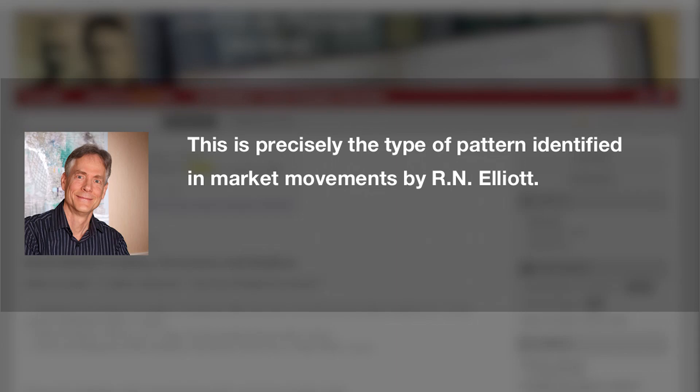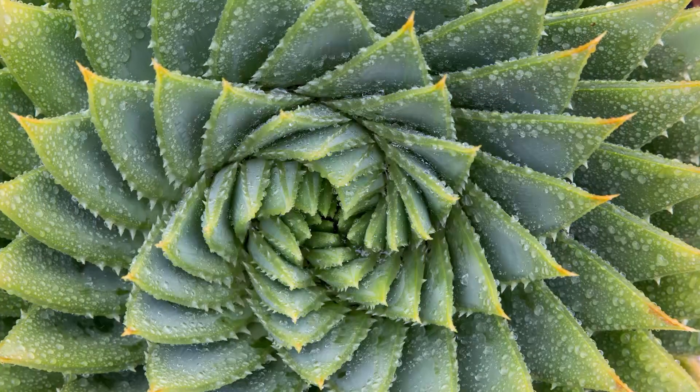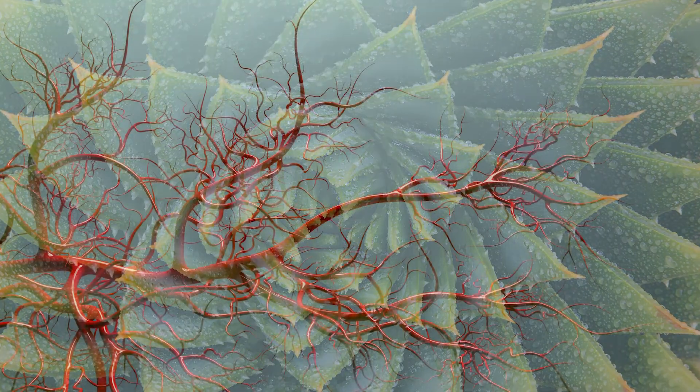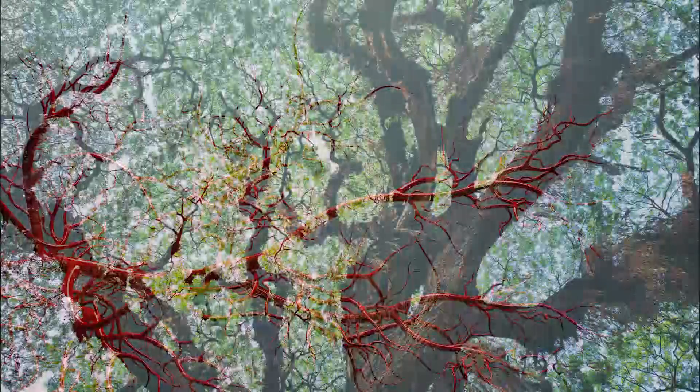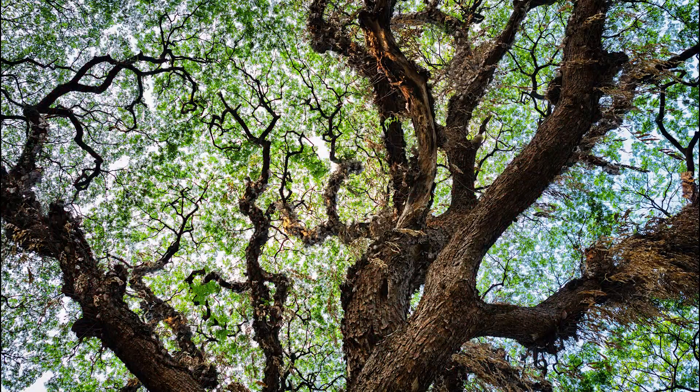This is precisely the type of pattern identified in market movements by R.N. Elliott. Nature is full of fractals. Consider branching fractals such as blood vessels or trees. A small tree branch looks like an approximate replica of a big branch,